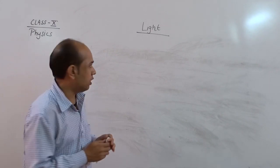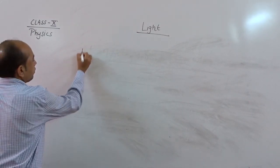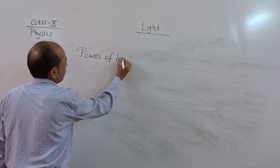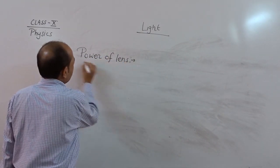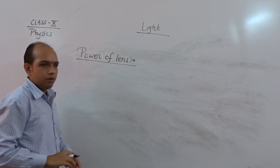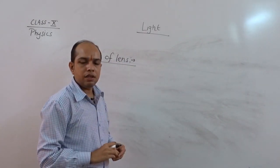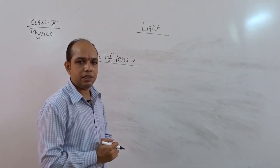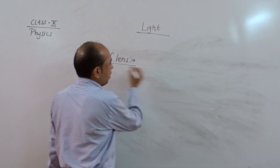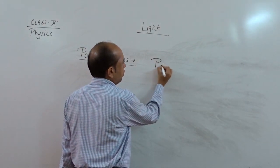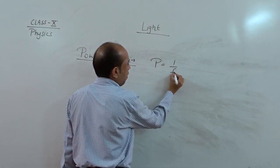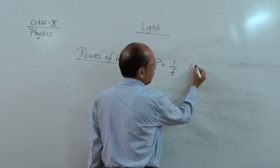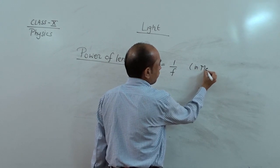Each lens have some power. So power of lens means here the reciprocal of focal length. This is called here power, that means ability. So power is defined by p is equal to 1 upon f, 1 upon f means reciprocal of focal length. This formula is in meter.